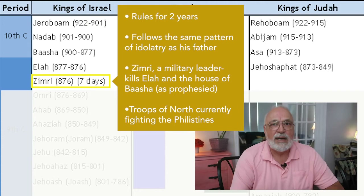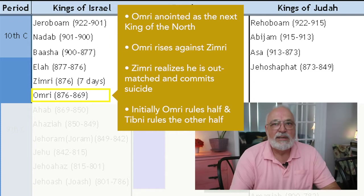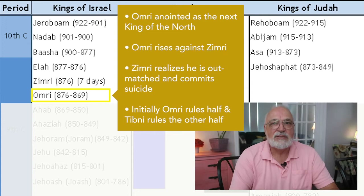Meanwhile, the troops of the northern kingdom are fighting against the Philistines when they get the news that Zimri has murdered Elah. They become outraged and anoint their leader, Omri, as the next king. Omri comes up against Zimri. Zimri realizes he is outmatched, and instead of allowing defeat, goes into his palace, sets it on fire, and commits suicide.